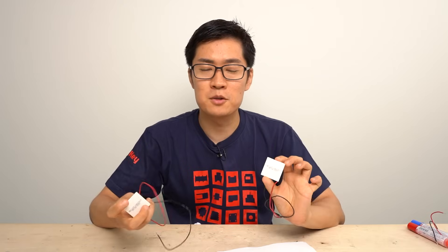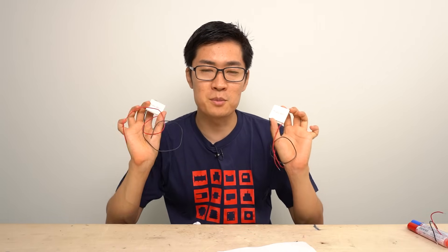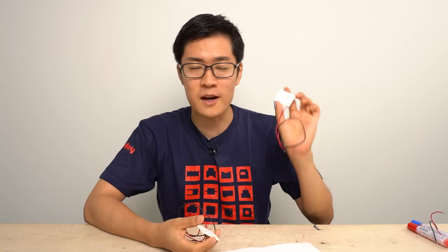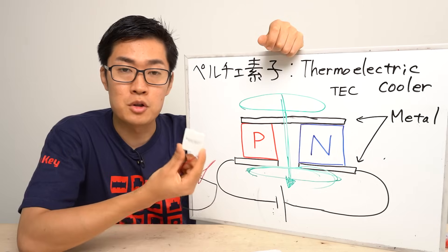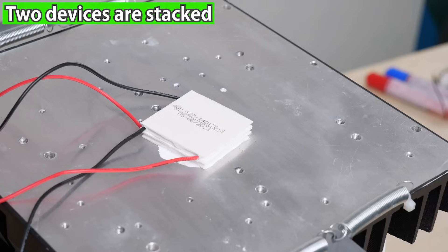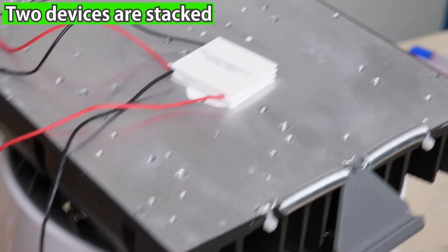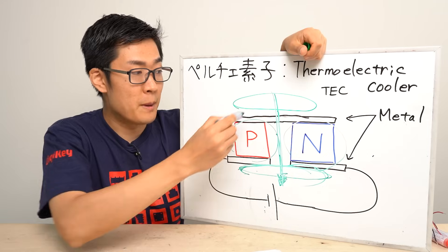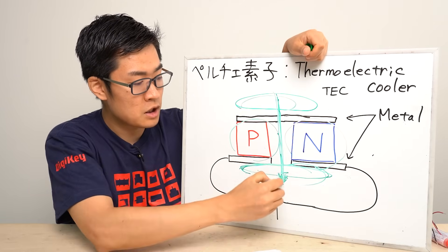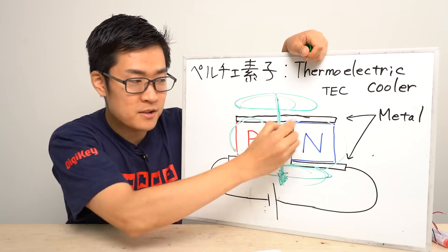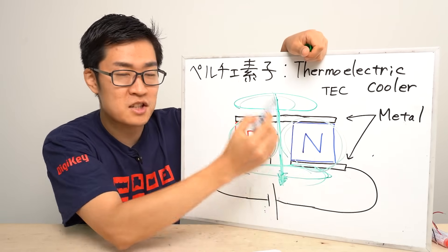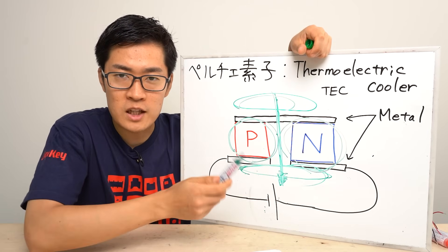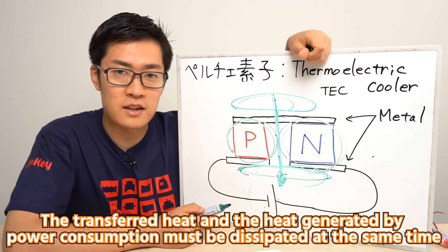From what I've explained so far, it seems like Peltier devices are really useful components. However, it can be challenging to actually use them, because Peltier devices generate a large amount of heat — consuming about a few watts to several tens of watts. In addition to the heat transferred by the Peltier effect, it is also necessary to dissipate the heat generated by the device itself. That is why heat dissipation from the hot side is very important.